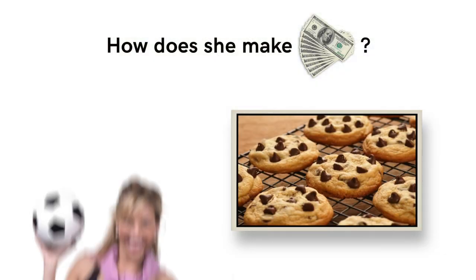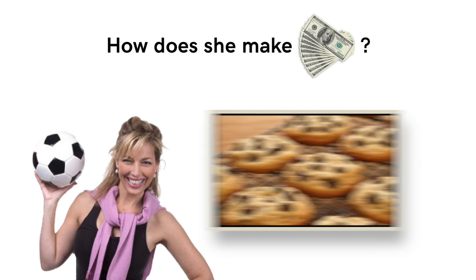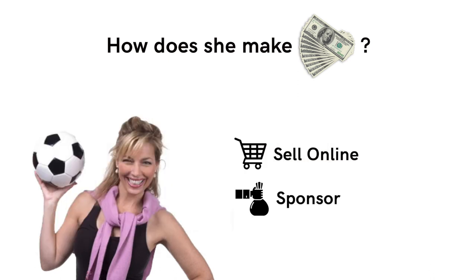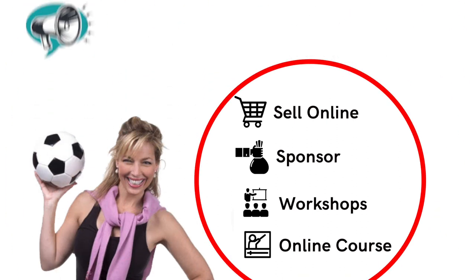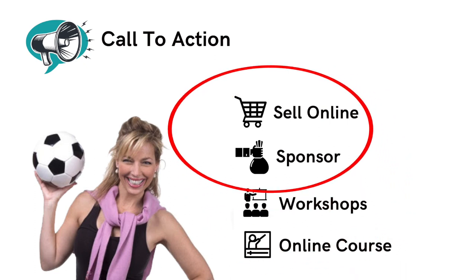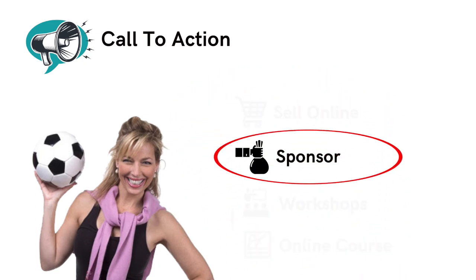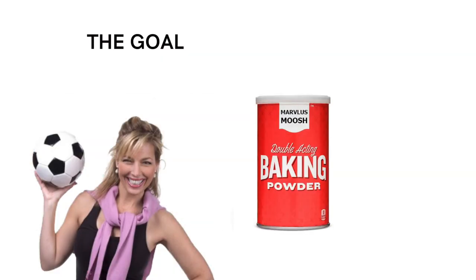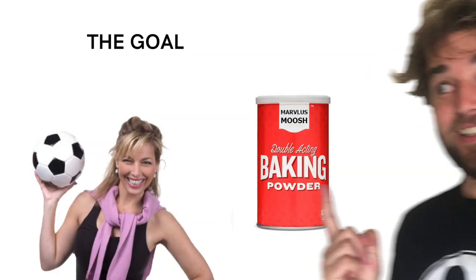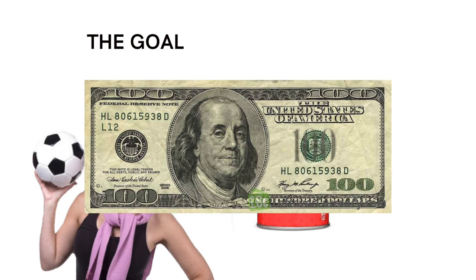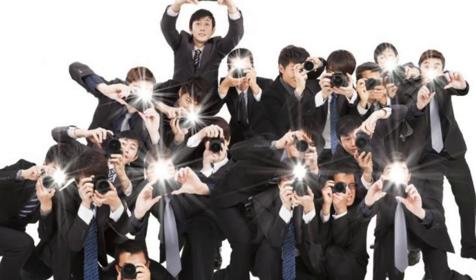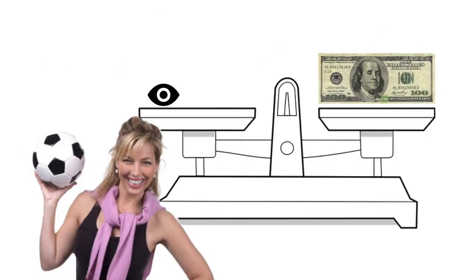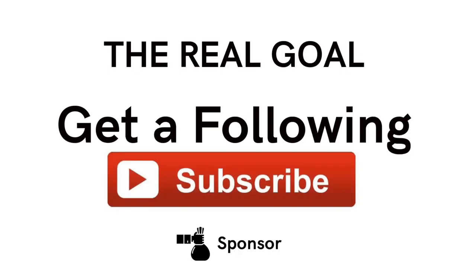How are you going to make money as soccer mom Susan? Is she going to sell recipes online, get a product sponsor, run baking workshops, or create online courses? This is what you call a strategy. For a clear call to action, you must focus on one goal at a time. Let's go with product sponsor. The goal for Susan is to get Marvellous Moosh Baking Powder — yes, I made that up — to sponsor her $100 per video. What does Marvellous Moosh want? To be heard and seen. Does Susie have $100 worth of eyes on her content? No. Therefore, her goal is to build a following to attract a product sponsor.